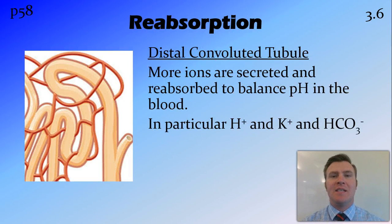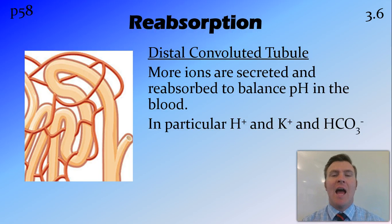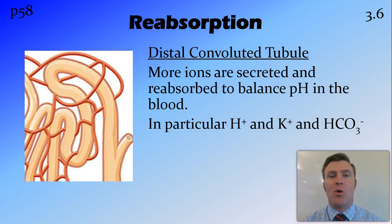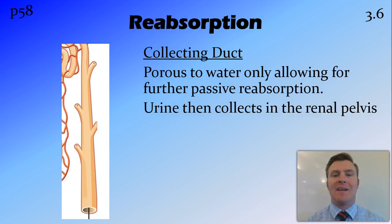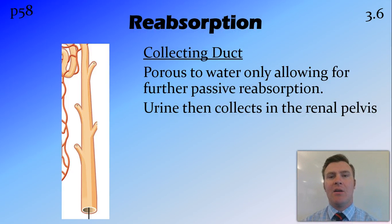Once we get to the distal convoluted tubule, more ions are secreted and reabsorbed, both passively and actively, and the main thing happening here is balancing pH in the blood. This involves hydronium ions, potassium, and more bicarbonate ions, which maintain a consistent pH. Then in the collecting duct, a small amount of water is again reabsorbed into the bloodstream, and what's left over collects in the renal pelvis as urine.